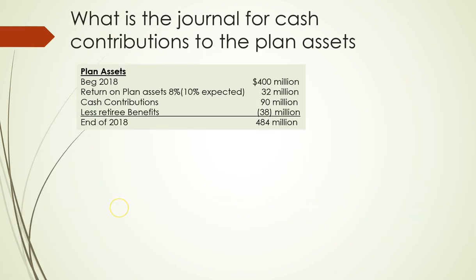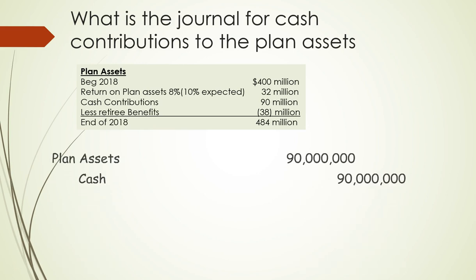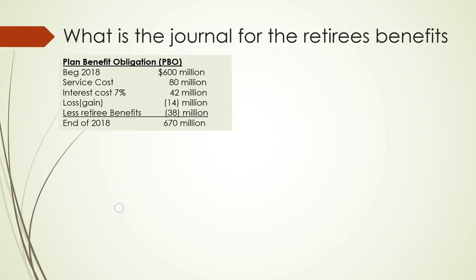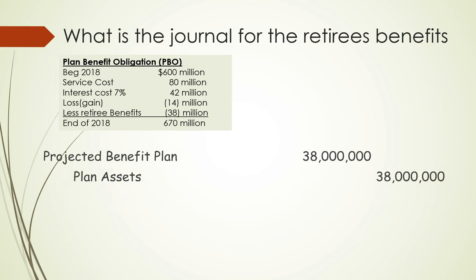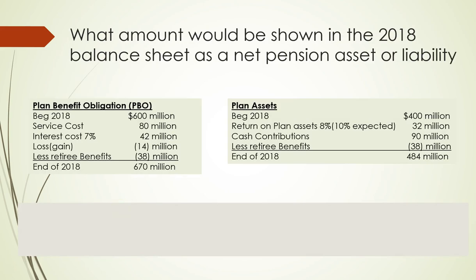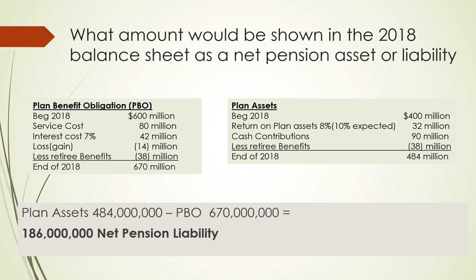The journal entry for cash contribution to plan assets is: debit plan assets, credit cash. The journal entry for retiree benefits paid is: debit PBO (reducing the obligation) and credit plan assets (reducing the fund). For the 2018 balance sheet, plan assets are 484 million and the plan benefit obligation is 670 million, resulting in a net pension liability of 186 million — so we are underfunded in this example.